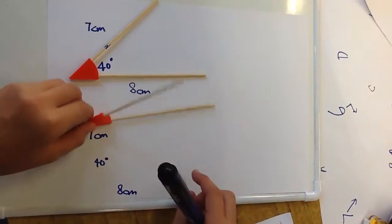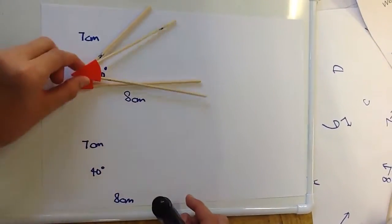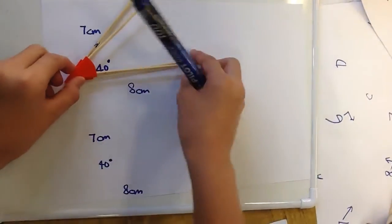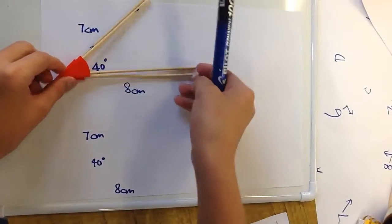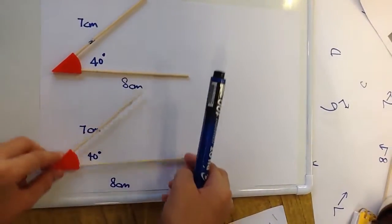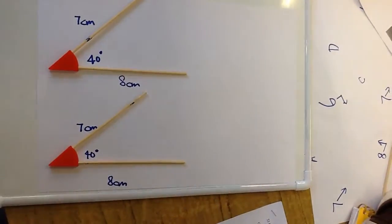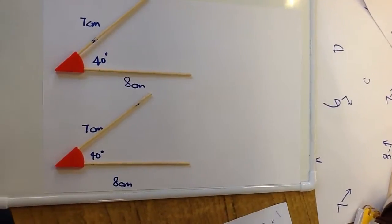So although they look like this, after reflection they can overlap together. So these two triangles are congruent.